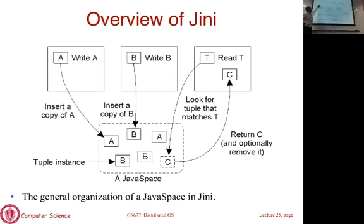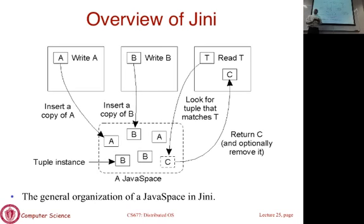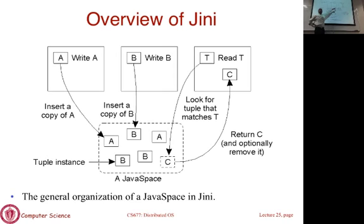Here in the figure: application one writes message A to the shared bulletin board. Application three tries to read it, specifying a query — think of it like a very simple database where you say 'show me all messages of type printer.' It searches through all messages, and whenever it finds a match the matches are returned. You look for all tuples matching a certain criteria; if tuple C matches, you can take delivery of it. You can also delete it or leave it.